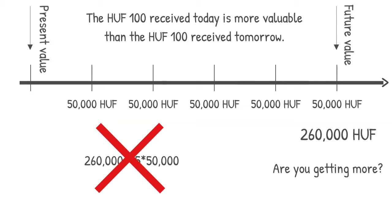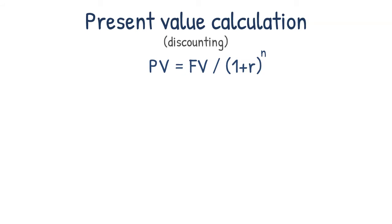When calculating the present value, we will look at how much the 260,000 forends offered to you in five years would be worth today. To be able to compare with the 5 times 50,000 forends, let's also look at how much they would be worth today. Determining the present value of money is called discounting. The present value calculation also shows how much you would need to invest today at a given growth rate to achieve the desired result over a given period of time. You can calculate the present value calculation using this formula.